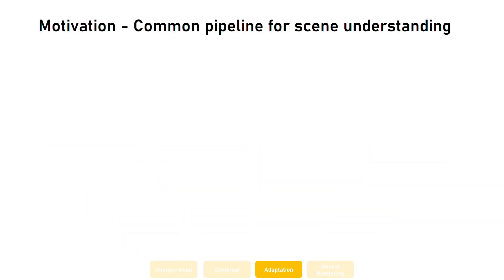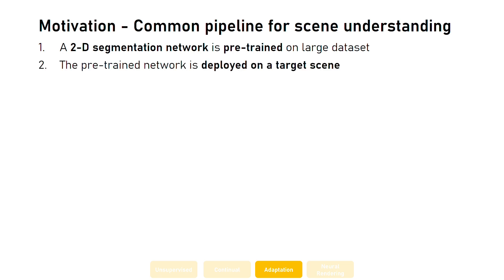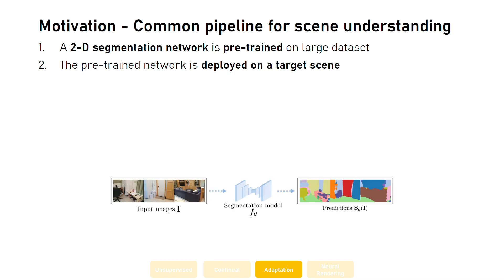Let's start by considering how a pipeline for scene understanding is commonly structured. Usually, in an initial stage, a 2D segmentation network is pre-trained on a large dataset using supervised learning. Then, the pre-trained network is deployed on data from a target scene. When doing so, however, two challenges arise.